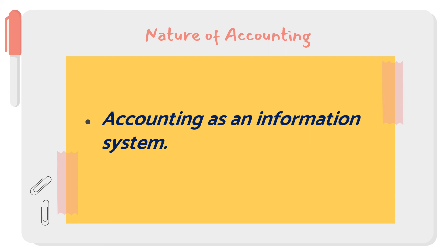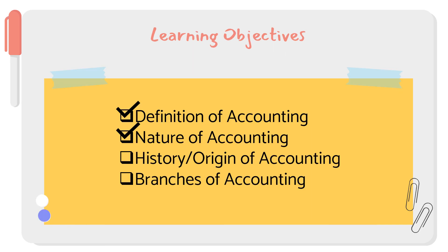That's the end of the nature of accounting. In summary, we have: accounting is a service activity, it is a process, it is both an art and discipline, it deals with financial information and transactions, and it is an information system. That's the definition and nature of accounting. For our next lesson, we're going to discuss the history or origin of accounting and then the branches of accounting or the areas of specialization.